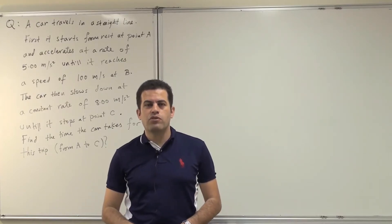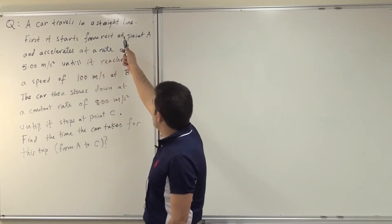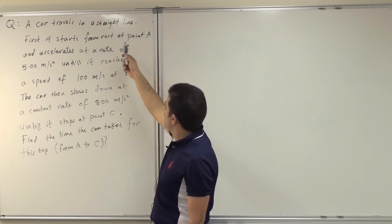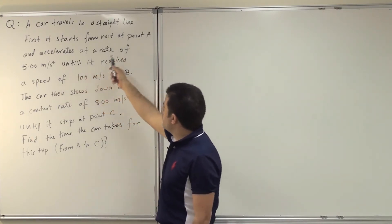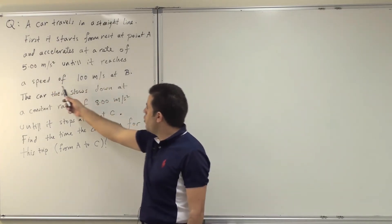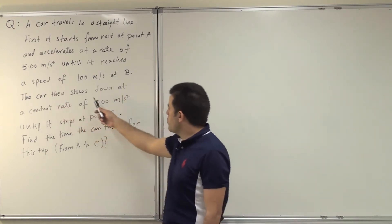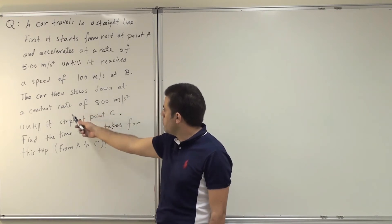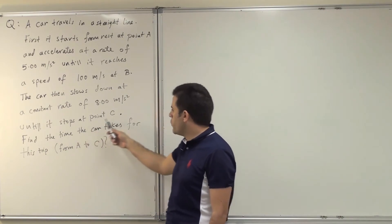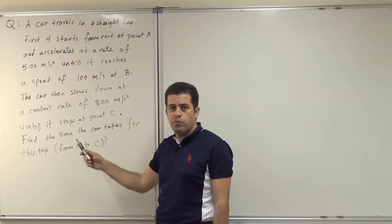As-salamu alaykum. Today we are solving questions from chapter 2. The question reads: a car travels in a straight line. It starts from rest at point A and accelerates at a rate of 5 meters per second squared until it reaches a speed of 100 meters per second at B. The car then slows down at a constant rate of 8 meters per second squared until it stops at point C. Find the time the car takes for this trip from A to C.